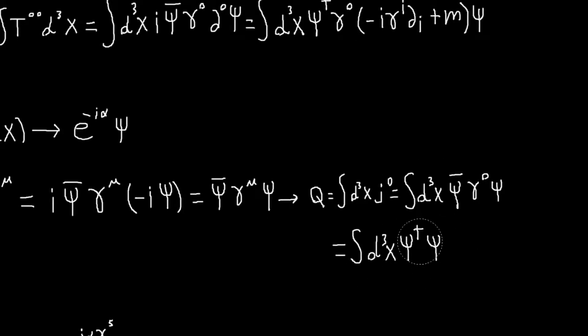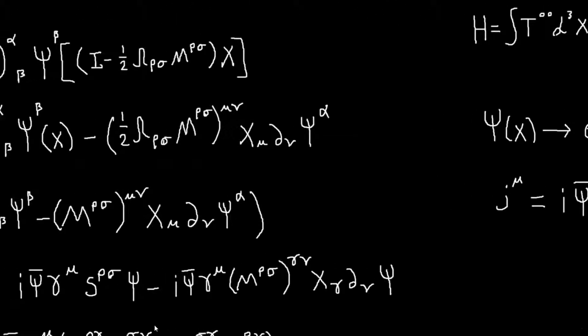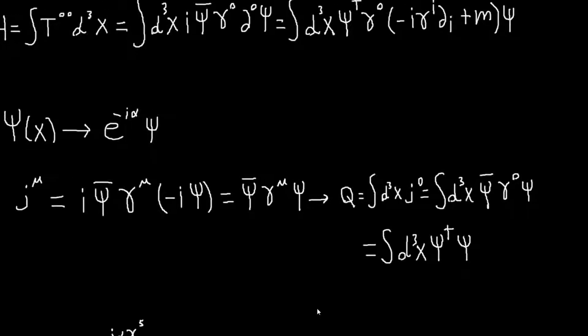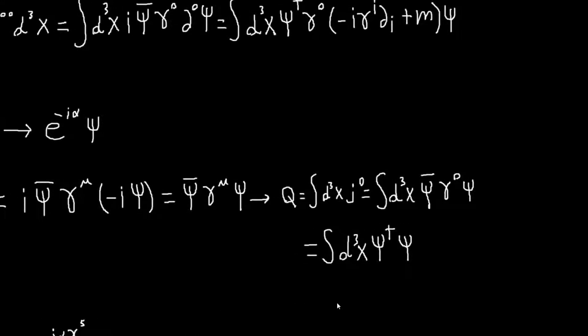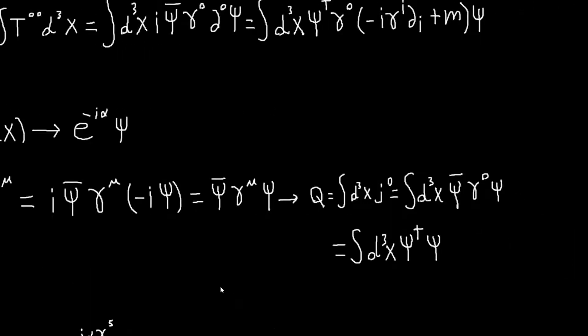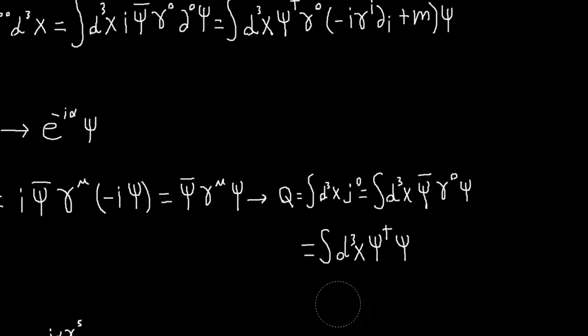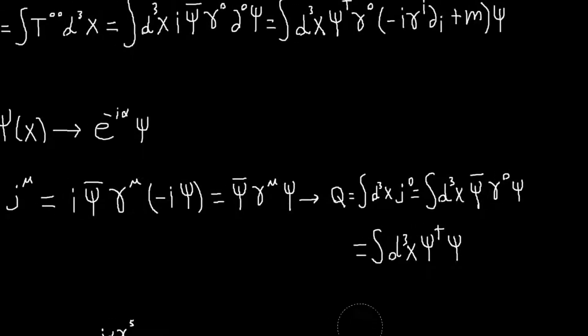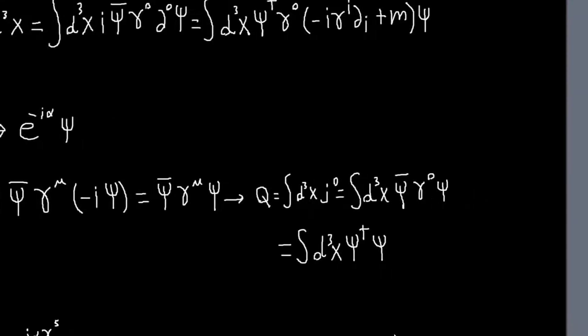Like charge, which of course, so being a complex spinner field... Yeah, so I guess complex scalar fields led to, you know, spin-zero particles and antiparticles, and now a complex spinner field leads to spin one-half particles and antiparticles.